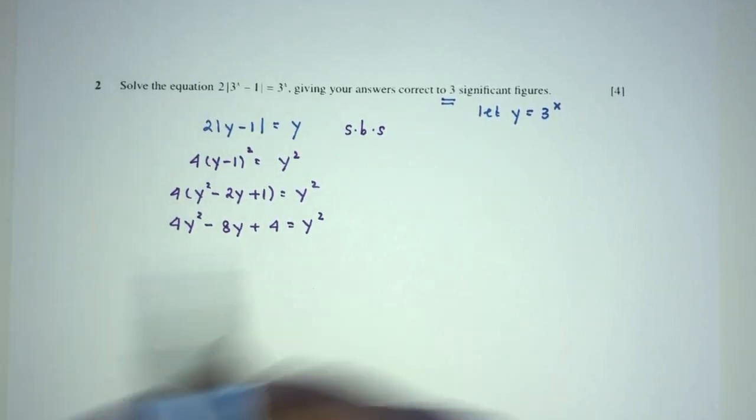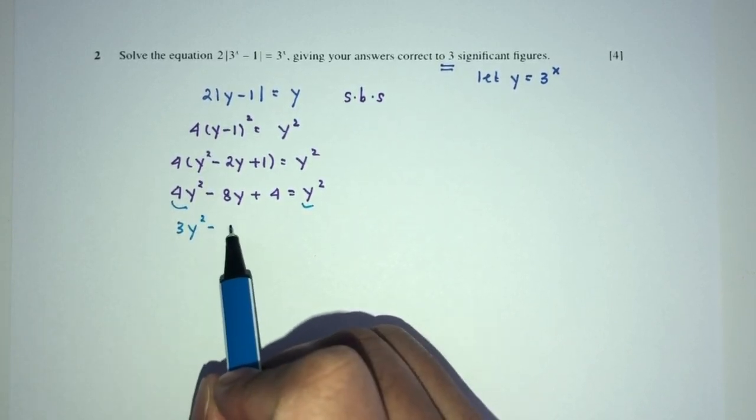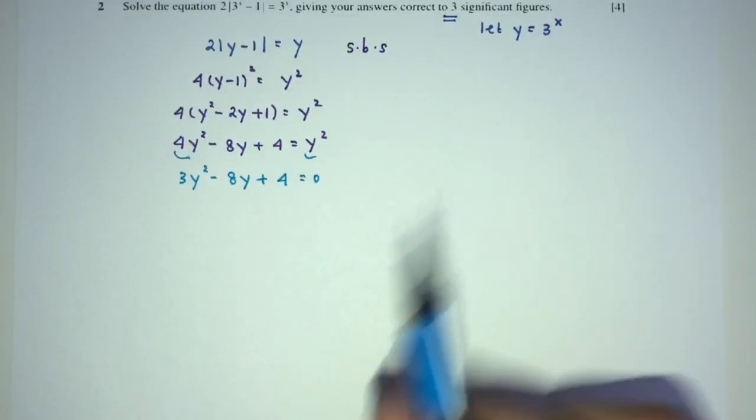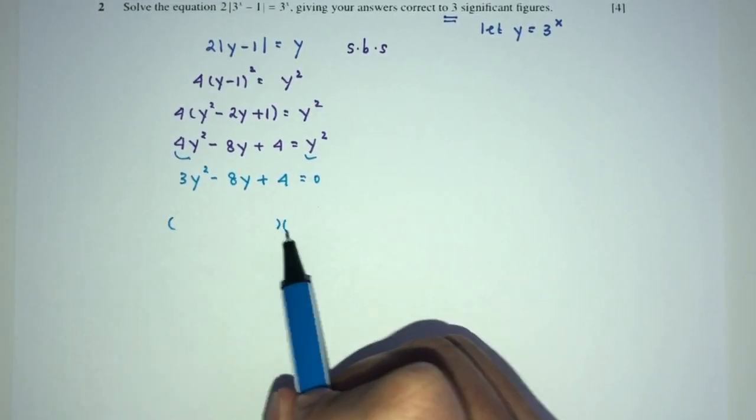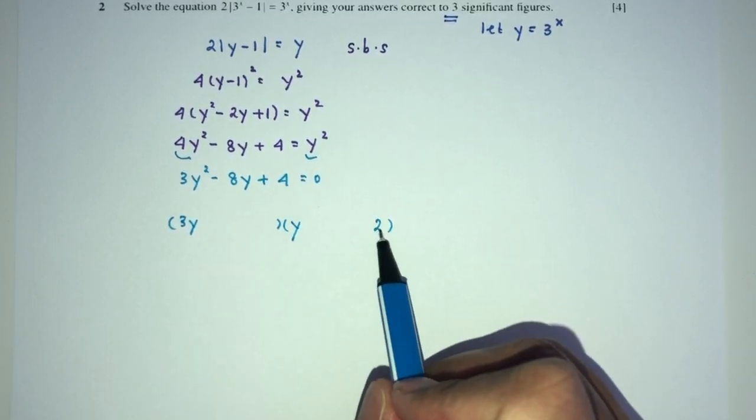Send everything to one side. You will have 4 minus 1 should be 3y squared minus 8y plus the value of 4, and that will be 0. Now, we can try to factorize and see what happens. It will be 3y times y.